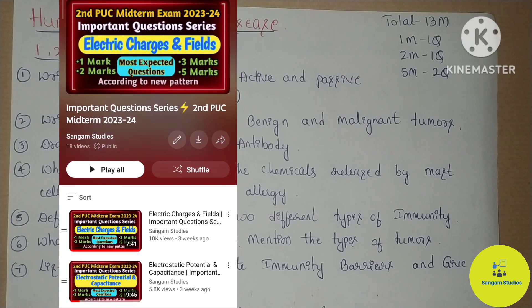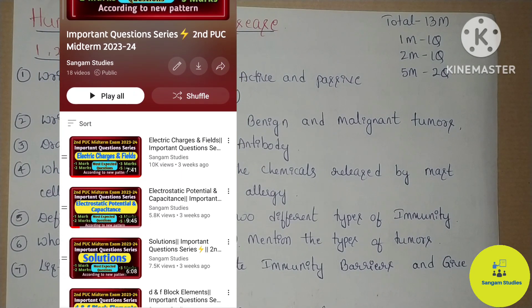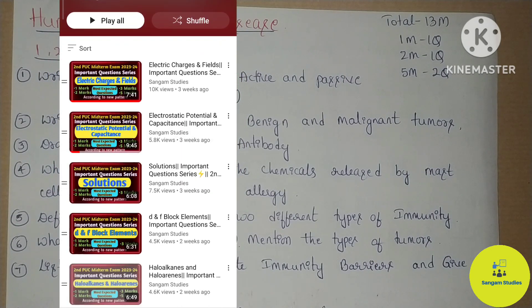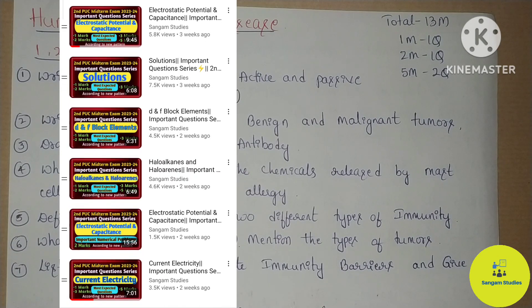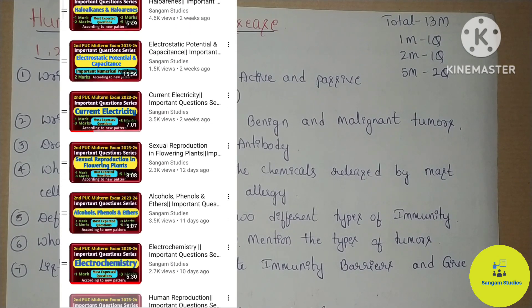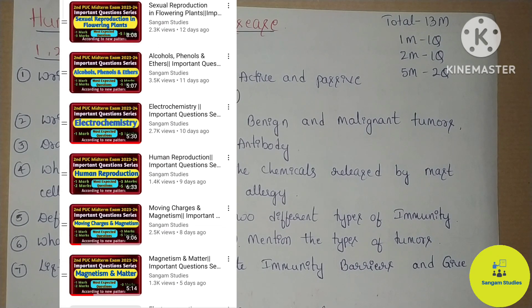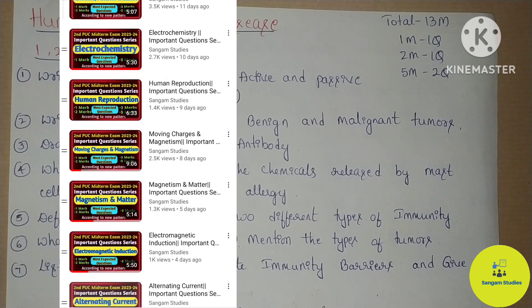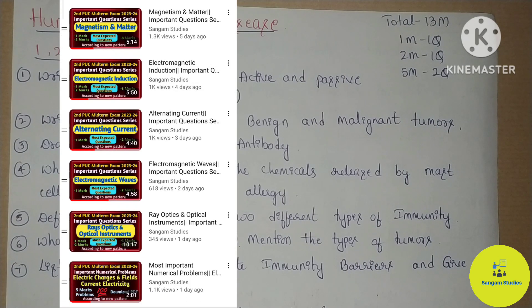Here we have 9 chapters: chemistry 5 chapters, biology 3 chapters of important questions. Also physics — electric charges and fields, electrostatic potential and capacitance, and current electricity. This chapter is also uploaded in the important numerical video.